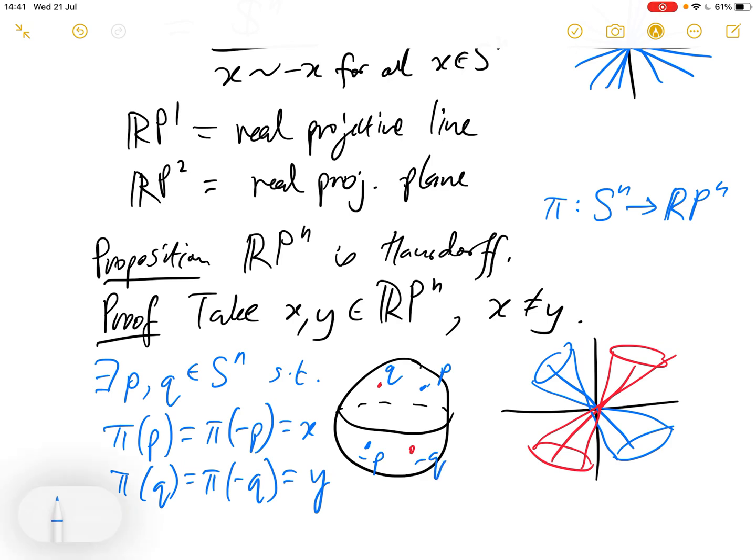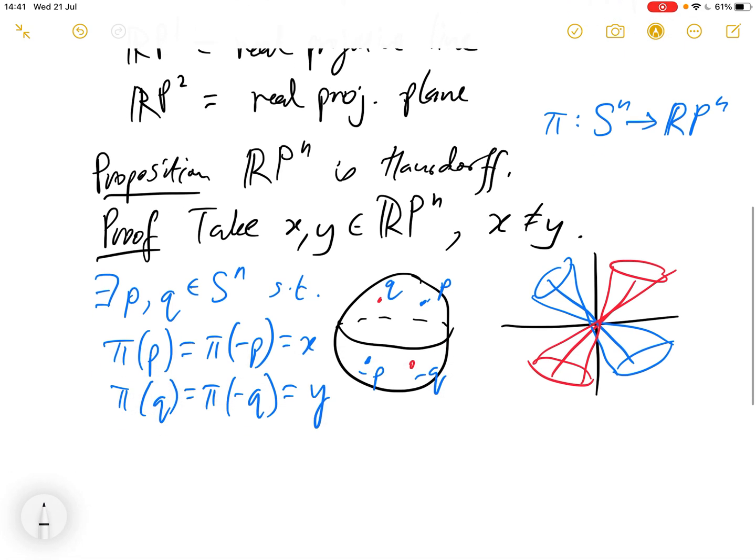So we've got P and minus P and Q and minus Q. And now Sn, we've already proved that Sn is a manifold. We know Sn is Hausdorff. So because Sn is Hausdorff, there are disjoint open sets